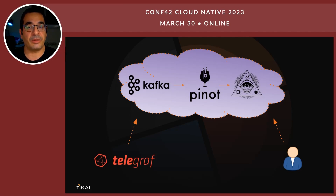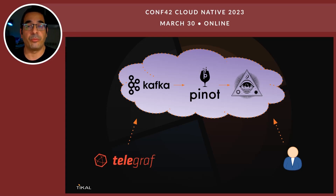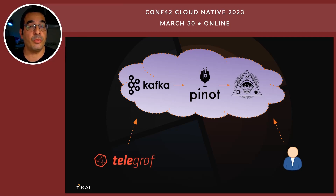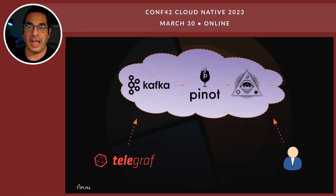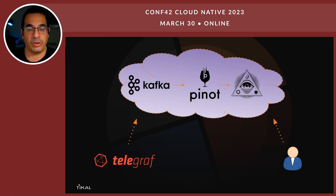Something short about the demo. I have set up a Kubernetes cluster using K3S. I am running Kafka, Pinot, and ThirdEye on my Kubernetes cluster. From my own laptop, I'm sending via Telegraf the metrics of my CPU performance to Kafka, which will be ingested into Apache Pinot. ThirdEye is going to query this data every minute — the lowest granularity ThirdEye supports — and it will try to see whether there is an anomaly in the data I'm sending.